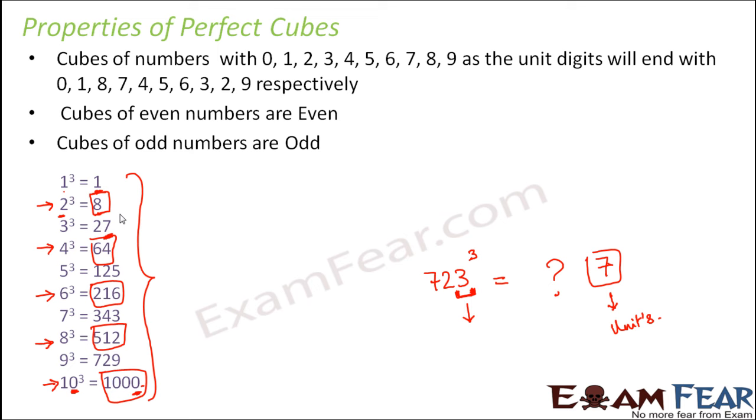Similarly, cubes of odd numbers are odd. That's because the numbers like 3, 5, 7, 9, they are odd numbers and their cubes are also odd.